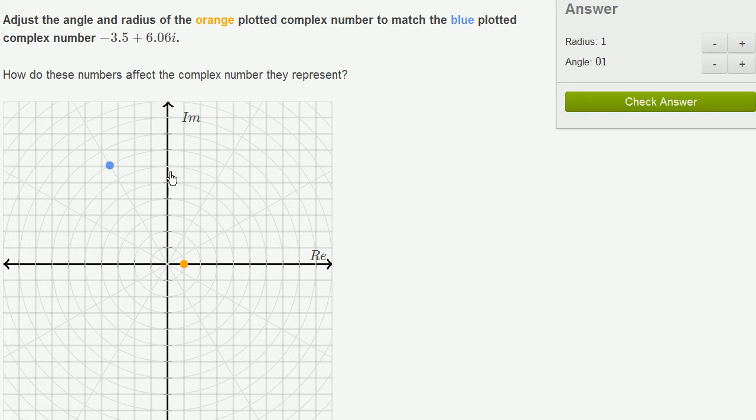So just to get our bearings, this vertical axis is the imaginary axis. This horizontal axis is the real axis.